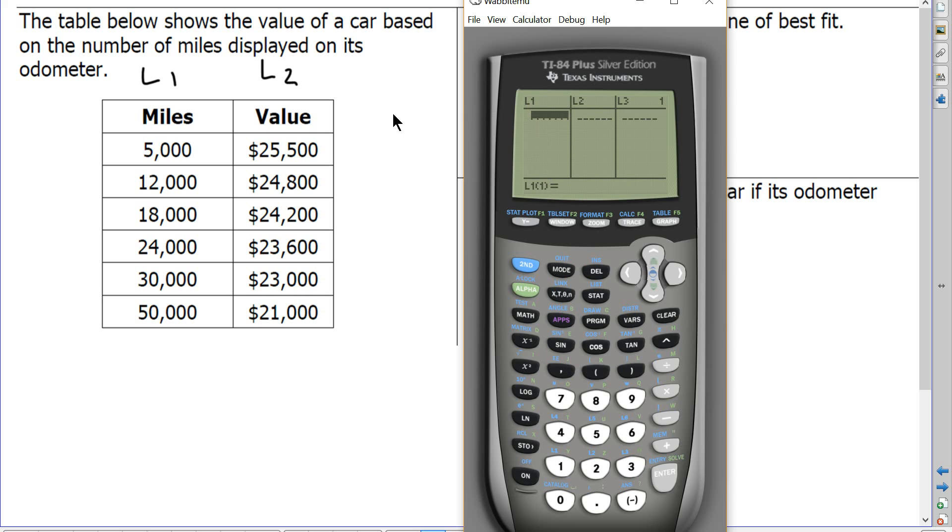So my first list is going to be all of my X values, or my miles. So 5,000 will be my first entry, press enter. 12,000 is my second entry, press enter. Then 18,000, and after each value you need to press enter to enter the next value. So 30,000, and then my final value would be 50,000. Alright, so let's double check. 1, 2, 3, 4, 5, 6 values, and it says my 6th value. Yep, so I have 6 values.